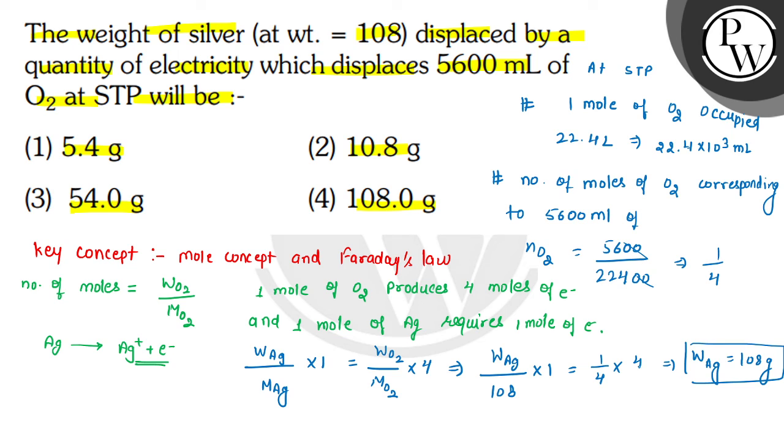We calculated this because 4 and 4 cancel out, and 108 goes here. Weight of silver is 108 grams. That means the weight of silver displaced by a quantity of electricity which displaces 5600 mL of O2 at STP is 108 gram.